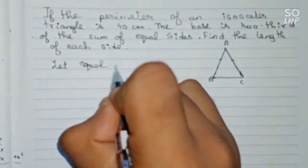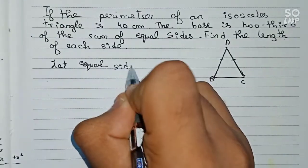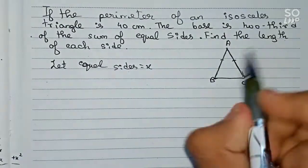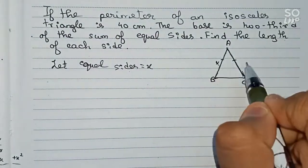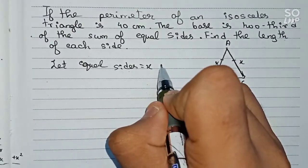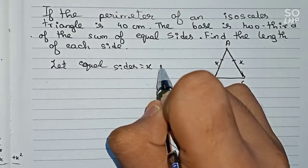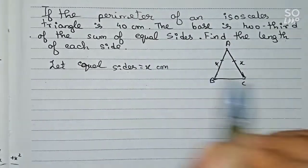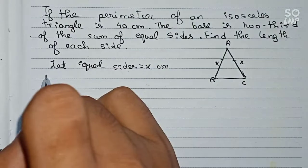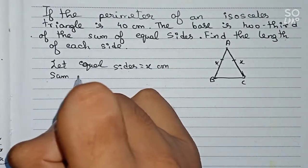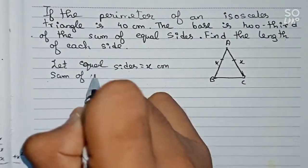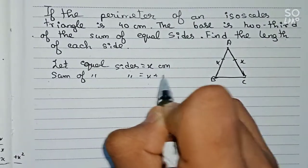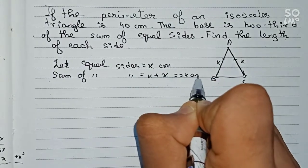Let the equal sides be equal to x centimeters. So this side is x and this side is x. The sum of the equal sides will be x plus x, which equals 2x centimeters.